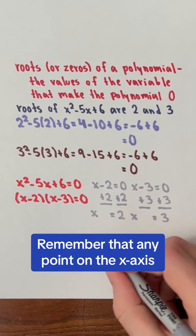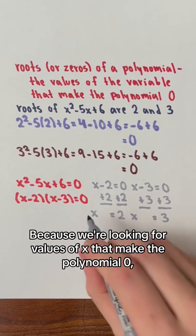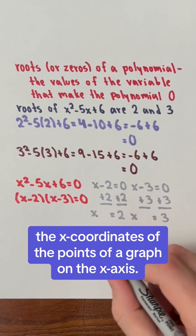Remember that any point on the x-axis has a y value of 0. Because we are looking for values of x that make the polynomial 0, these values are x-intercepts, the x-coordinates of the points of a graph on the x-axis.